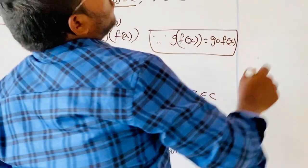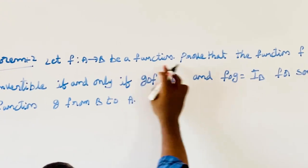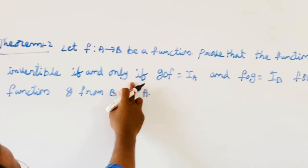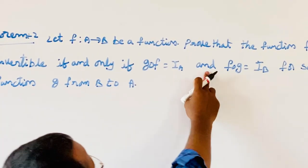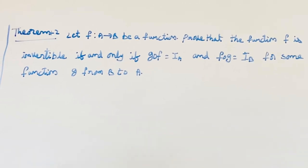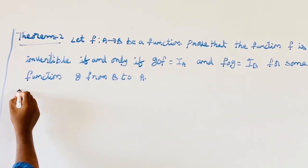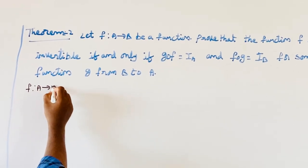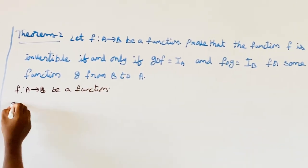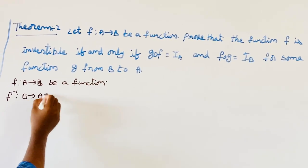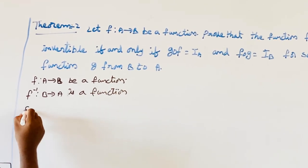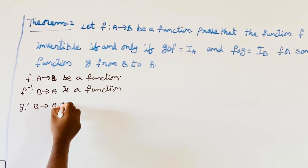Theorem 2: Let F map A to B be a function. Prove that the function F is invertible if and only if G∘F equals I_A and F∘G equals I_B, for some function G from B to A. Let F: A to B be a function, F inverse: B to A is a function, and G: B to A is a function.